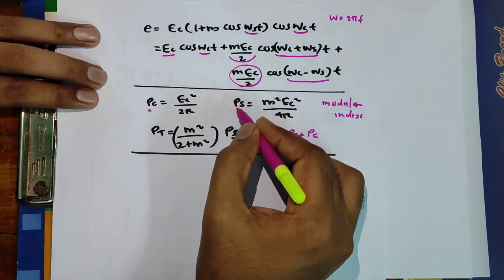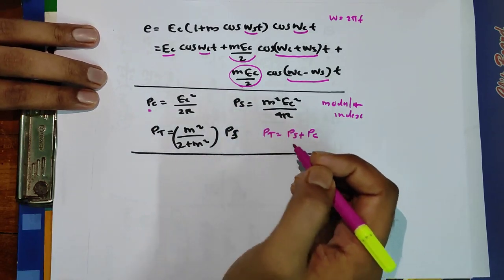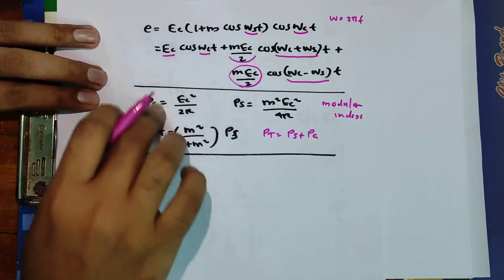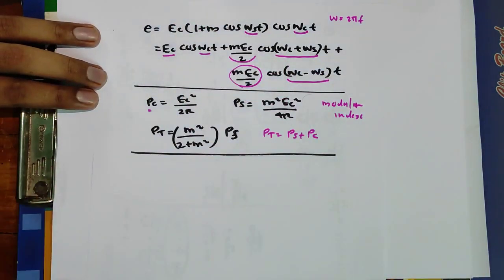P_sideband represents power in the sideband — that is upper sideband power plus lower sideband power. These three formulas are now important items to keep in memory.